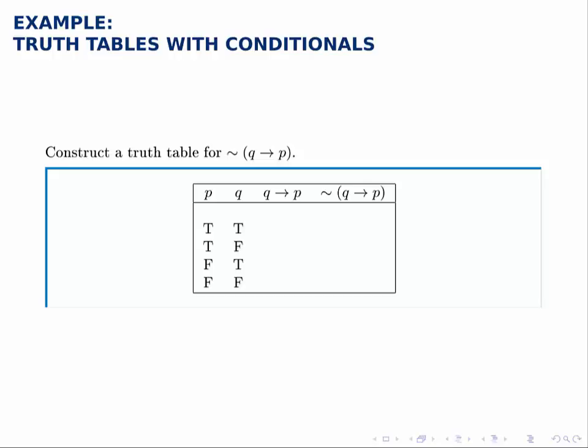So first, we'll build the column for Q implies P, and then we'll simply negate that column.